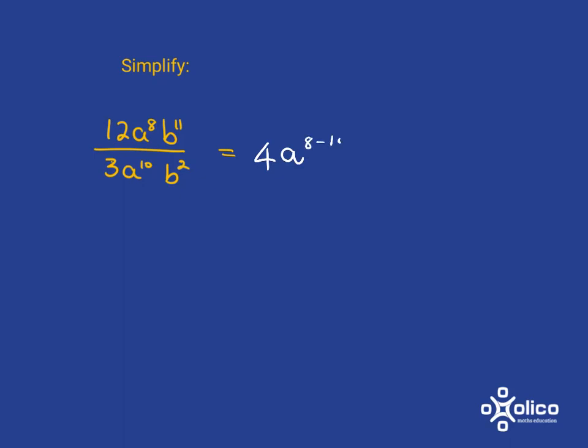So in terms of simply writing, using the rule for division, it's going to be a to the 8 minus 10. And then we move on to deal with the b's. You've got b to the 11 at the top and b to the 2 at the bottom. So it's going to be b to the 11 subtract 2.